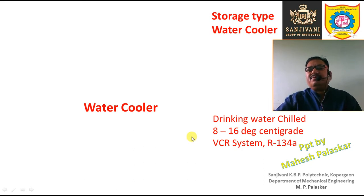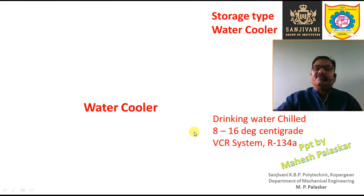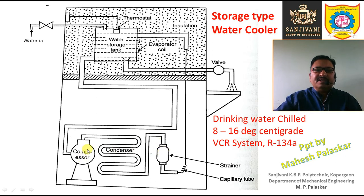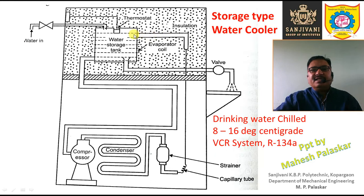The water cooler may be of two types: the storage type water cooler and the instantaneous type water cooler. The storage type is sometimes also called the bottle type water cooler. In the storage type water cooler, we use the vapor compression refrigeration system with a compressor, condenser, dryer-strainer, capillary tube as the expansion device, and an evaporator coil.